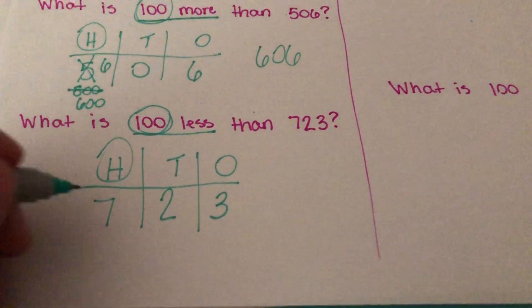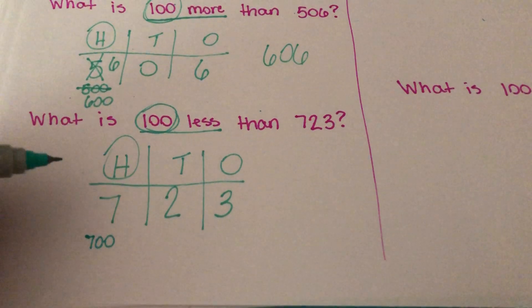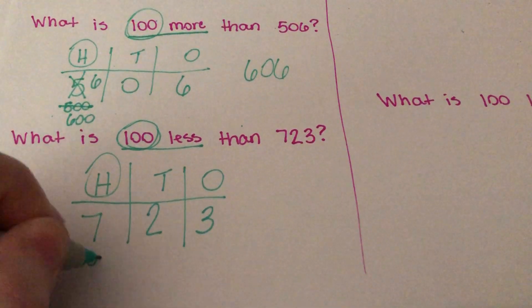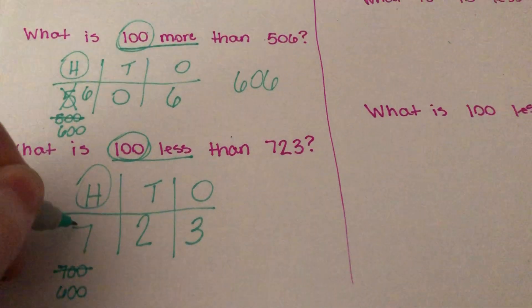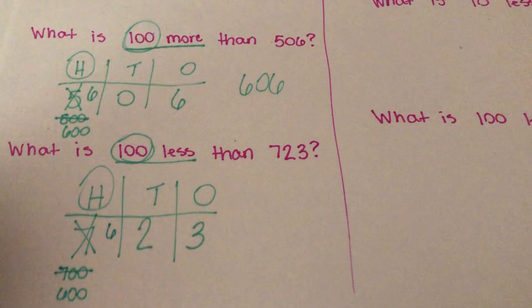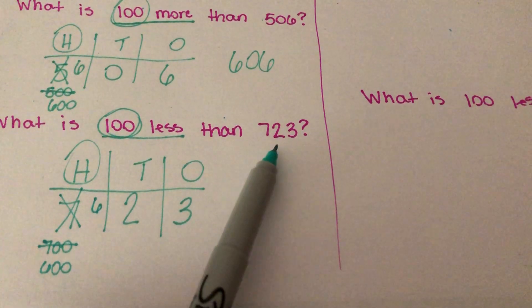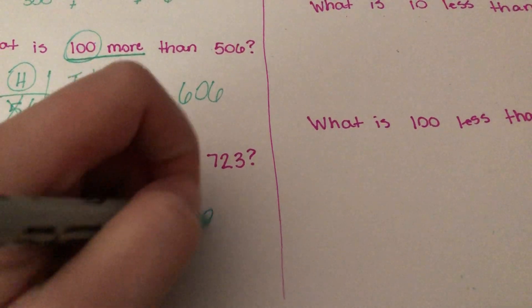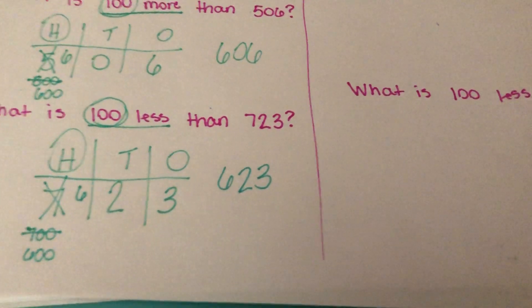We know that this 7 is worth 700. And we know that 100 less than 700 is 600. Making this 7 turn into a 6. 100 less than 723 is the number 623. That is your answer.